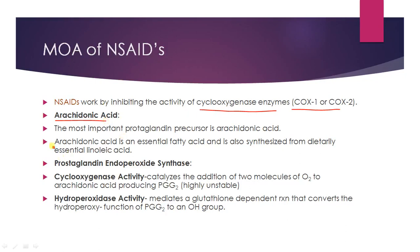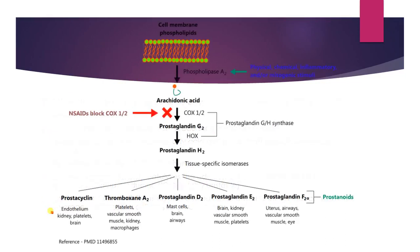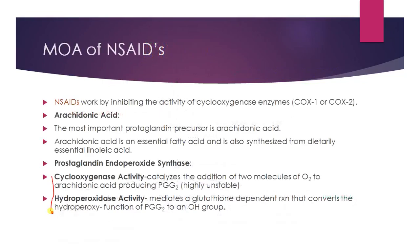Prostaglandin endoperoxidase synthase is a pathway with two activities: cyclooxygenase activity and hydroperoxidase activity. The cyclooxygenase activity catalyses the addition of two molecules of oxygen to arachidonic acid, producing prostaglandin G2. In the second step, hydroperoxidase activity mediates the glutathione-dependent reaction that converts the hydroperoxide function of PGG2 to a hydroxy group.